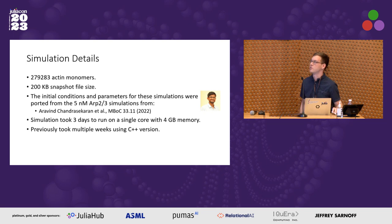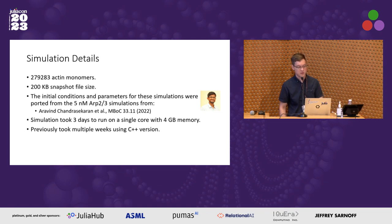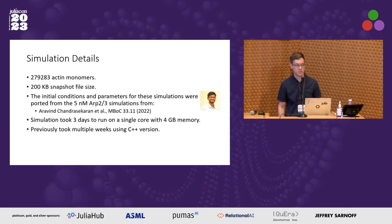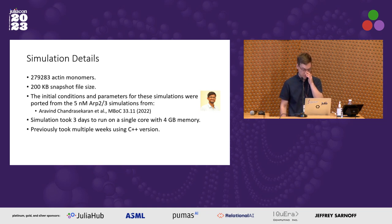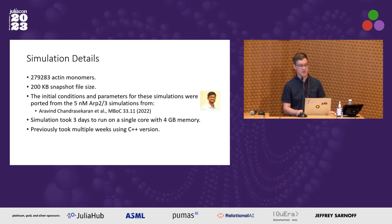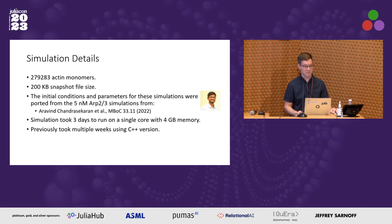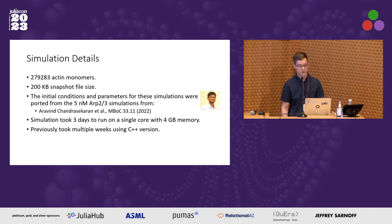I'll go over the numerics and scale of these simulations. In the previous simulations, there were around a quarter of a million individual actin monomers making up the filaments, and each system state snapshot is around 200 kilobytes. Running these simulations used to take multiple weeks on our previous C++ implementation, but now in Julia we can run them in around three days on a single core with just 4 gigabytes of memory.